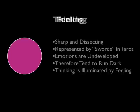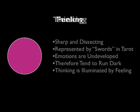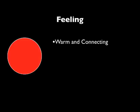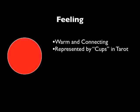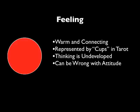The other judgmental function — the other rational function — is feeling. People whose major function is feeling tend to be very warm and connecting. In the tarot deck it's represented by cups. Cups hold water, they hold wine. Thinking tends to be undeveloped, and people with a strong feeling function can be wrong with attitude. The opposite problem: if your major function is feeling, you need to develop your thinking. The best way to do that is with math — take some math courses. Because like water and wine, feelings are all over the place and can be inappropriate, cross boundaries. Just as water and wine need to be held by cups, feelings need to be disciplined by thinking.